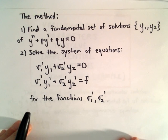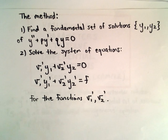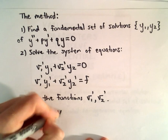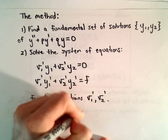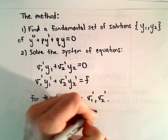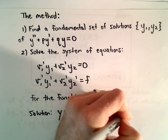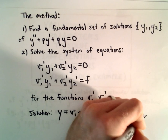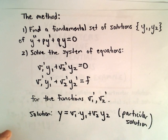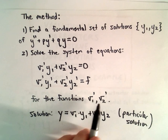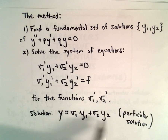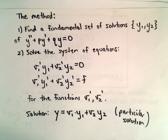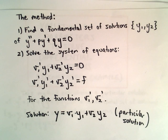Our particular solution is going to look like y = v₁·y₁ + v₂·y₂. So once we figure out v₁' and v₂', we can figure out v₁ and v₂, multiply that by the original fundamental set, and that gives us a particular solution. That's why we're interested in finding v₁ and v₂.